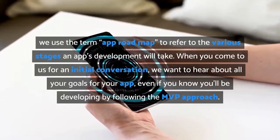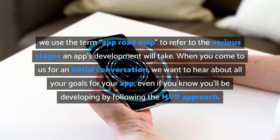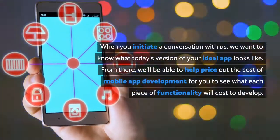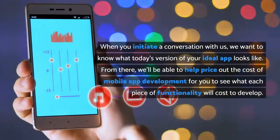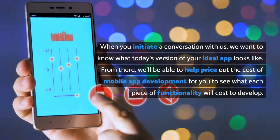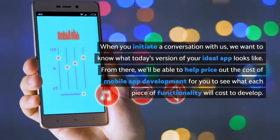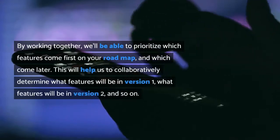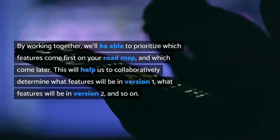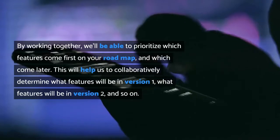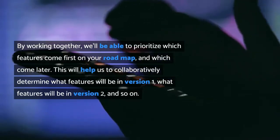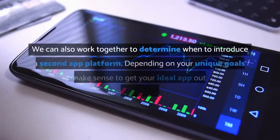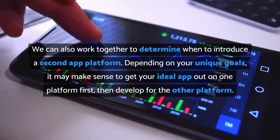When you come to us for an initial conversation, we want to hear about all your goals for your app, even if you know you'll be developing by following the MVP approach. We want to know what today's version of your ideal app looks like. From there, we'll be able to help price out the cost of mobile app development for you to see what each piece of functionality will cost to develop. By working together, we'll be able to prioritize which features come first on your roadmap and which come later. This will help us collaboratively determine what features will be in version 1, version 2, and so on. We can also work together to determine when to introduce a second app platform.